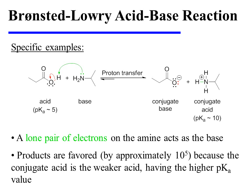The products are favored by approximately 10 to the 5th, because the conjugate acid is the weaker acid, as shown by its higher pKa value.